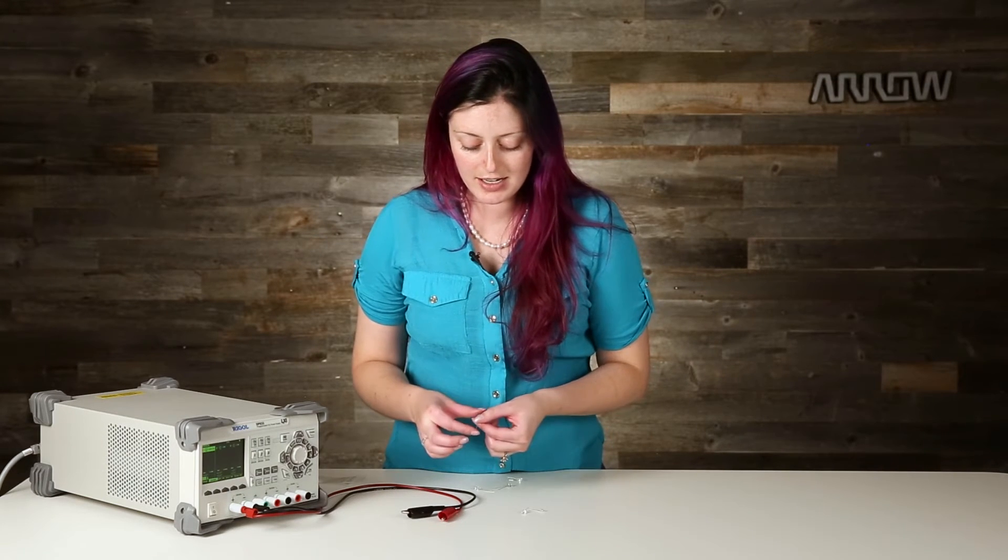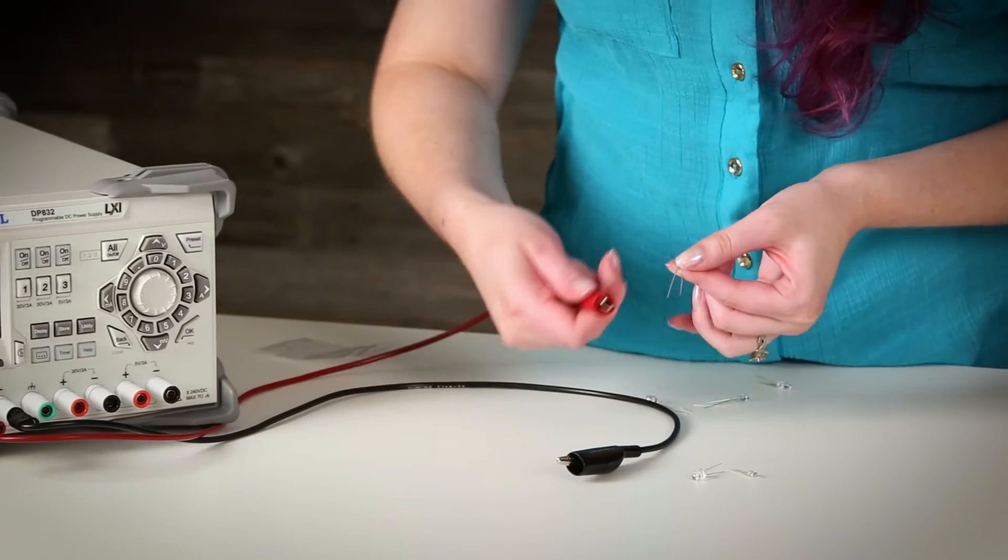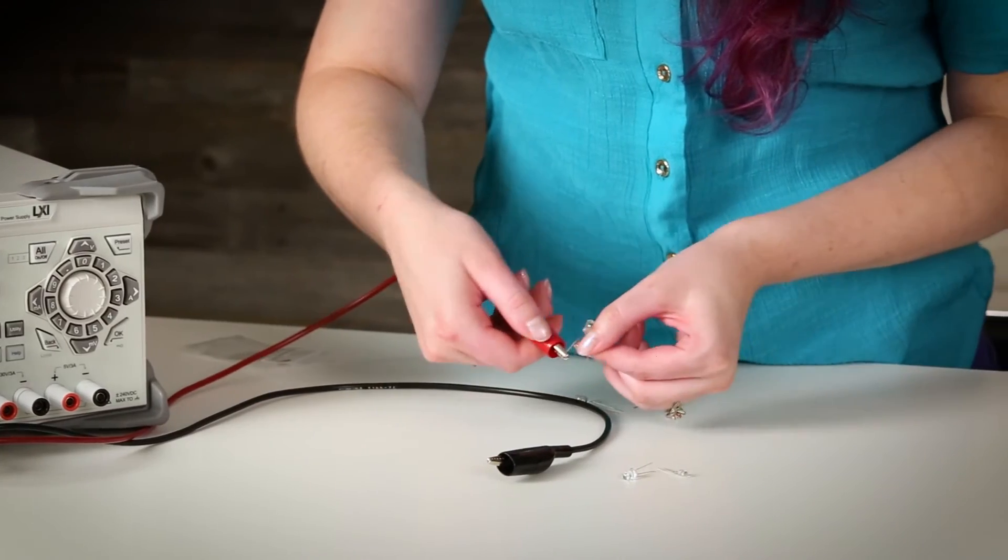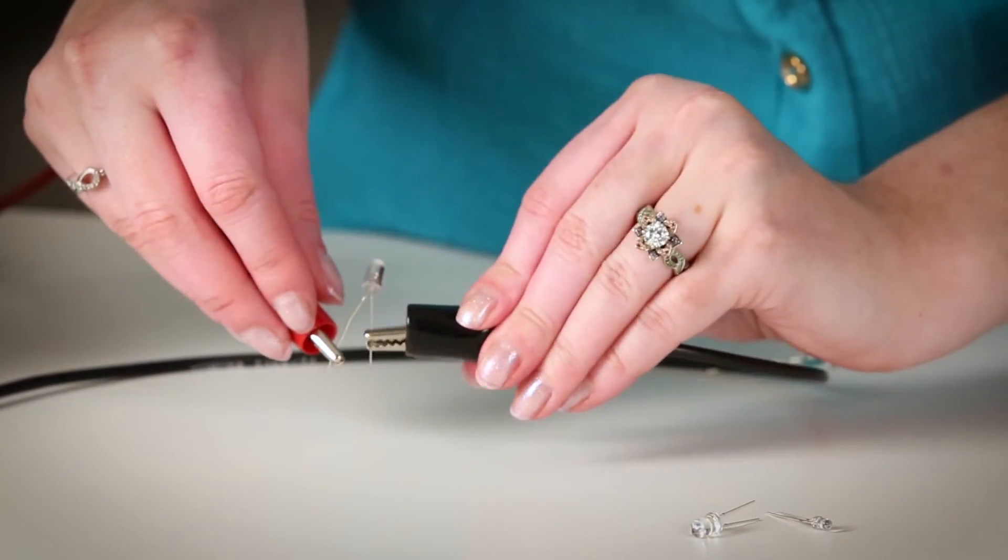Every LED with two leads like this has a longer lead and a shorter lead. The longer lead is called the anode and it is the positive lead. Shorter lead, cathode, negative lead.